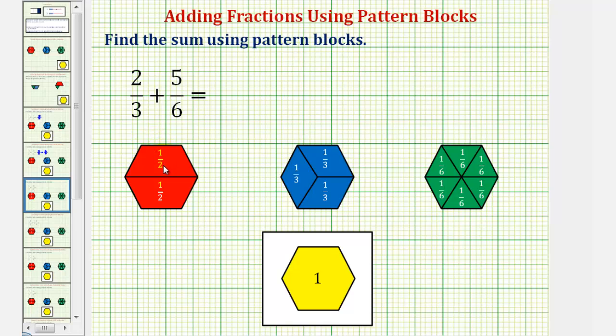So one red pattern block is equal to one-half, one blue pattern block is equal to one-third, and one green pattern block is equal to one-sixth.